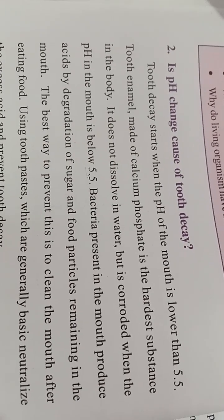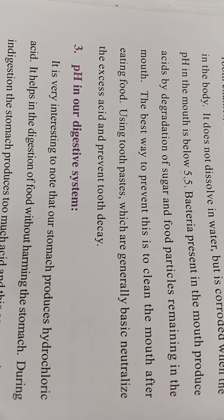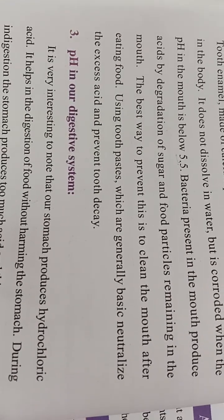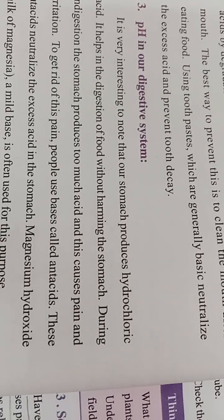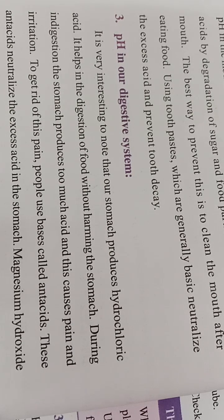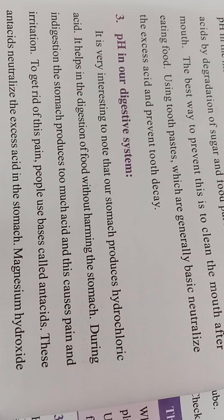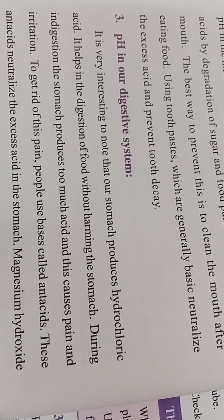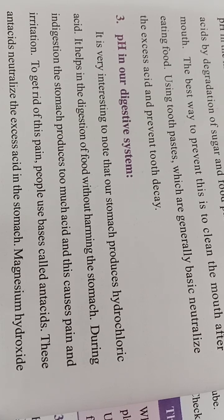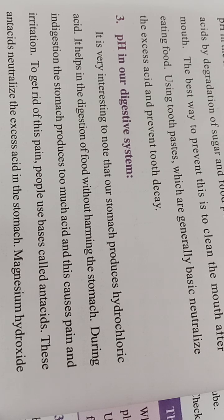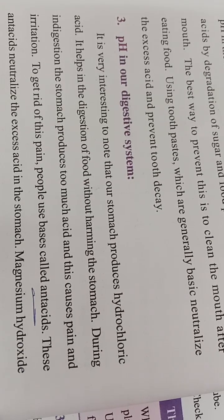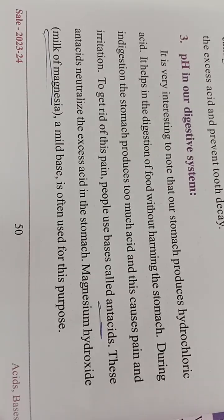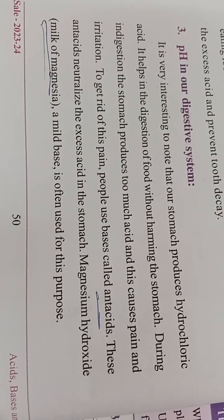To stop tooth decay, we use toothpaste in the morning. The nature of toothpaste is basic. Even though only a little acid is present in our mouth, we use toothpaste which is basic in nature to neutralize it. Regarding the pH of our digestive system: gastric juice present in our stomach produces hydrochloric acid - a very strong acid. If you eat too much and release excess acid, you feel irritated. To get relief, people use antacids to neutralize the excess acid. Magnesium hydroxide, or milk of magnesia, a mild base, is often used as an antacid.